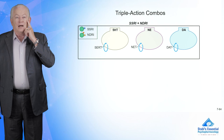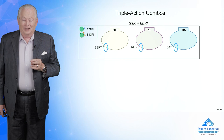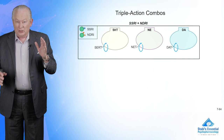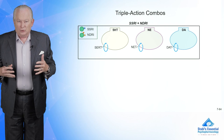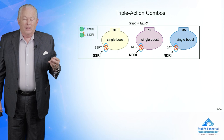What you're trying to do is essentially bad math — you're hoping that 1 plus 1 equals 10, and you're even hoping that 1 plus 1 plus 1 might equal 100. That's called synergy, where the output is greater than the sum of the parts. That's pharmacology — and when you have the right pharmacology, you'll get triple action: serotonin, norepinephrine, and dopamine.